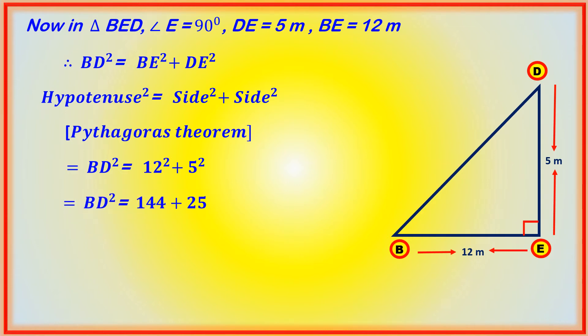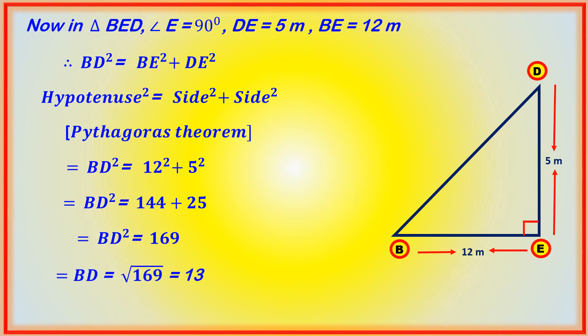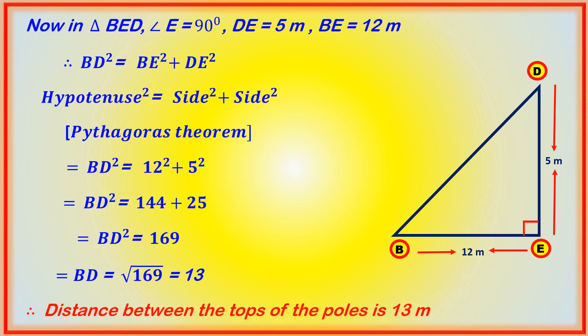BD square is equal to 144 plus 25, which is equal to 169. Therefore BD is equal to the square root of 169, which is equal to 13. The distance between the tops of the poles is 13 meters, that is BD is equal to 13 meters.